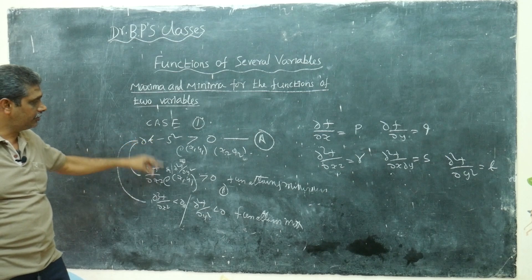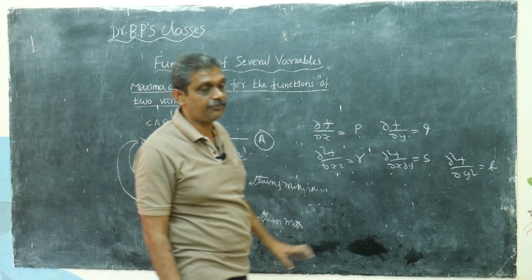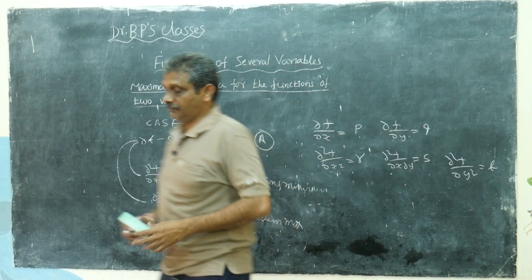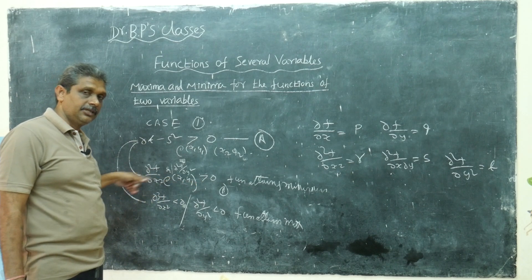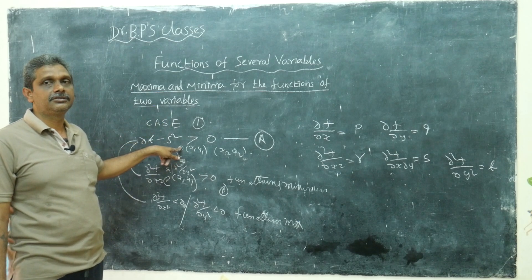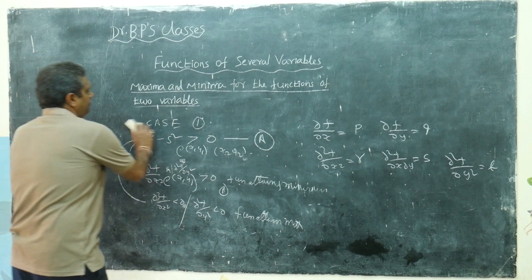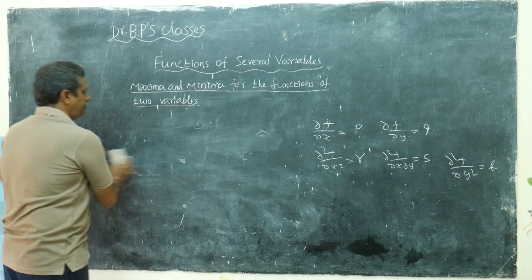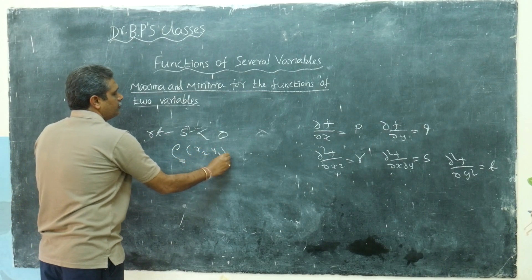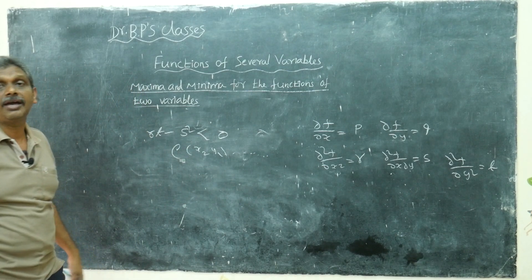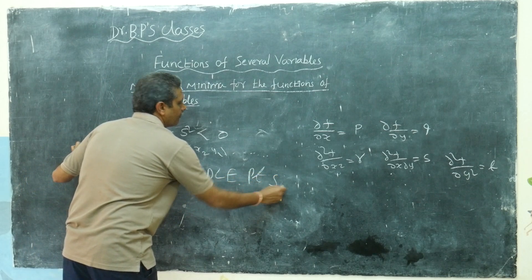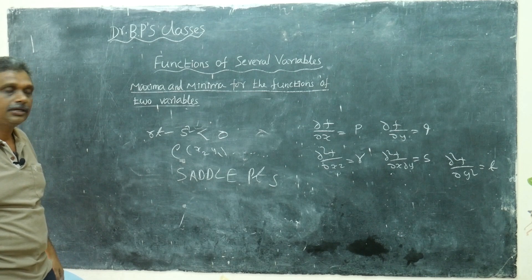To summarize the cases: the extreme points and stationary points are where the function attains maxima or minima. For rt − s² > 0: if r < 0 the function attains a maximum, if r > 0 it attains a minimum. If rt − s² < 0 at some point, the function attains neither a maximum nor a minimum — these are called saddle points.